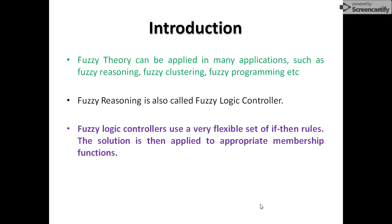Fuzzy logic controllers are a very flexible set of if-then rules. Like in general programming, we specify if-then rules: if this happens, then do this. Same in fuzzy reasoning, we generally apply some specific if-then rules. The solution we get using those if-then rules is then applied to an appropriate membership function and we get a specific result.